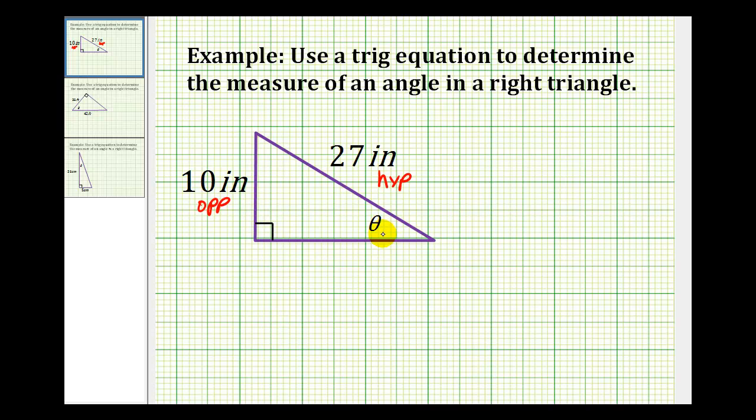So this tells us that we'll have to use the sine function, since we know the length of the opposite side and the length of the hypotenuse. So, sine theta would have to be equal to ten twenty-sevenths.